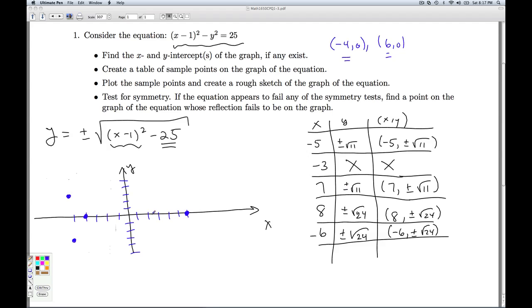At 7, we get plus or minus square root 11 as well. So here's 7, and so we're up at the same altitude here. And then at 8, we're at plus or minus square root 24, which is just shy of 5. So roughly there. And then we also have the point down below.